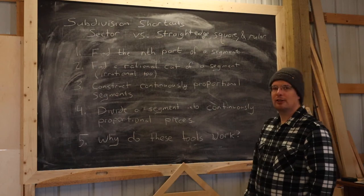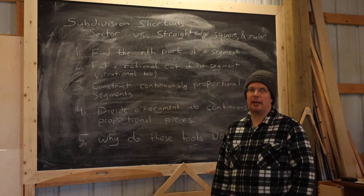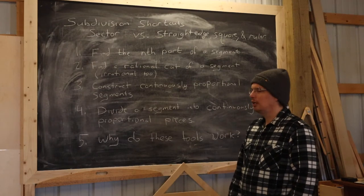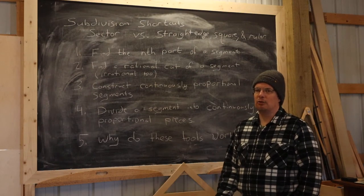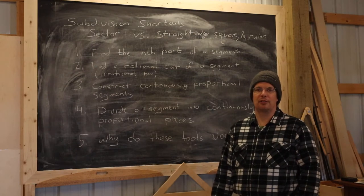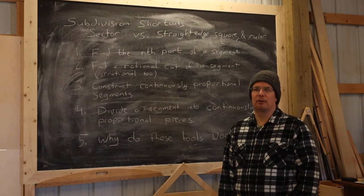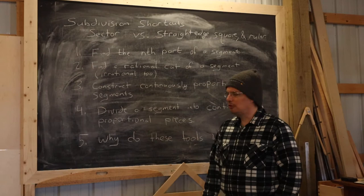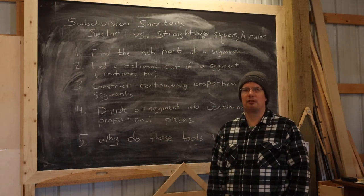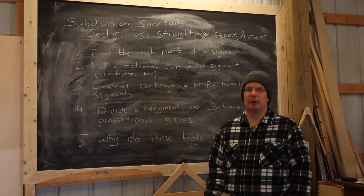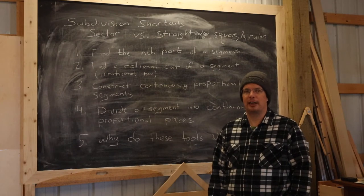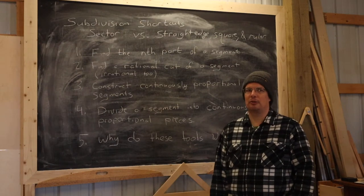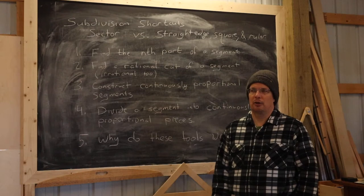We're going to find a rational cut of a segment, meaning if I've got a particular length I'd like to quickly cut off 3 eighths of that length, or 5 nineteenths of that length. It turns out we can also cut off irrational pieces of a given segment — we just have to construct that irrational cut at a larger scale first. We'd also like to construct continuously proportional segments: one segment, then another scaled up or down by a factor, then another scaled by that same factor, and so on.